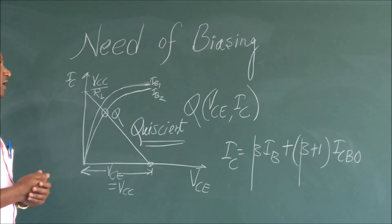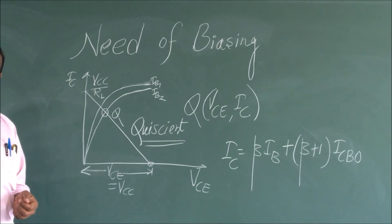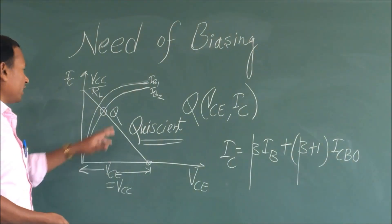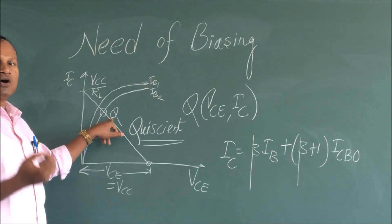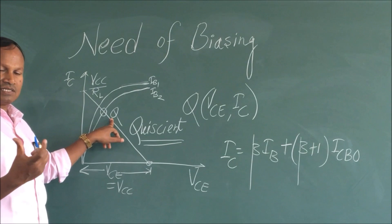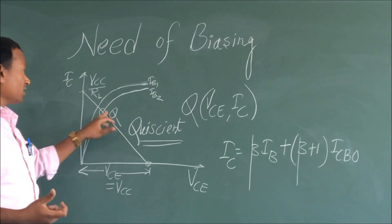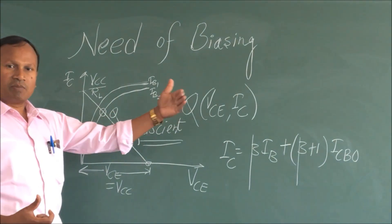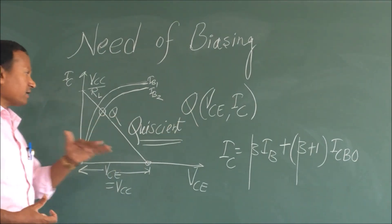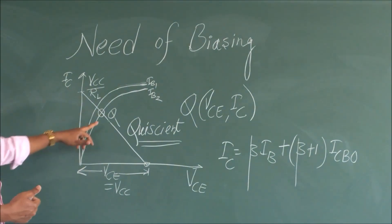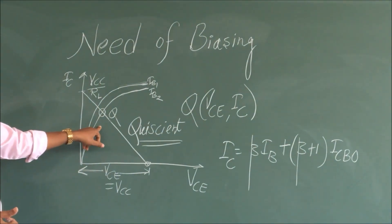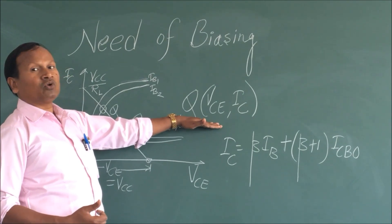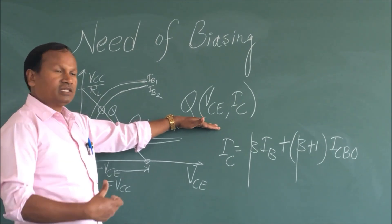What is the operating point? The whole operation of the transistor is determined by how stable the Q-point is. Is there any fluctuation? Is there any variation? Accordingly, we are going to look at the operation of transistors. So let us come to understand what we actually mean by Q-point.